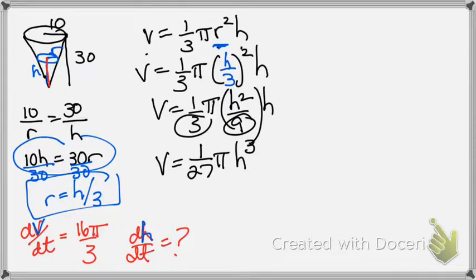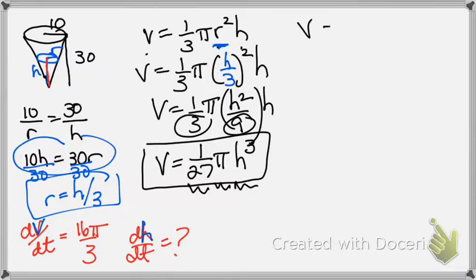And that's what you want the final equation to look like. There's usually a fraction and a π and either an h³ or an r³, depending on which one you got rid of. All right, now we have our volume equation, but we don't have time involved. We don't have any rates involved. So now we're going to take that equation and do the derivative of both sides.